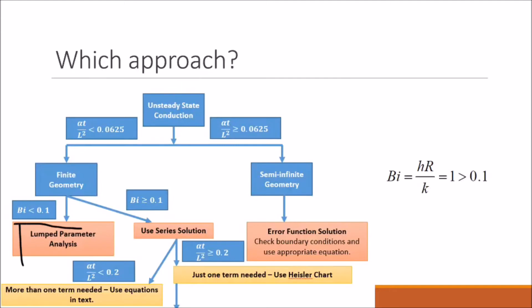Either the lumped parameter analysis or the series solution. The way we do this is by finding the Biot number. If the Biot number is less than 0.1, we can use our lumped parameter analysis, which is usually much faster and easier than using a Heisler chart. However, because our Biot number is greater than 0.1, we cannot use a lumped parameter analysis.